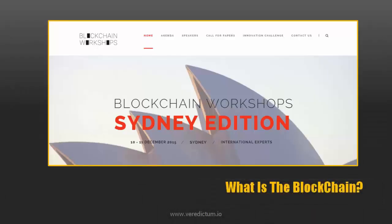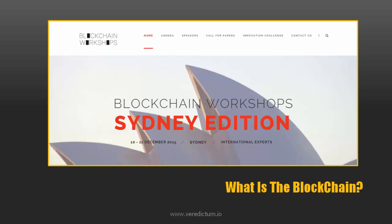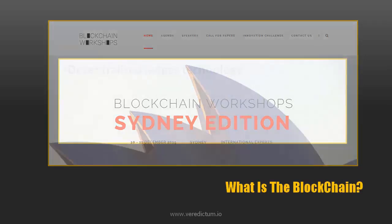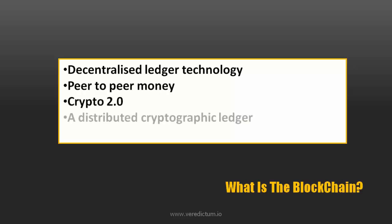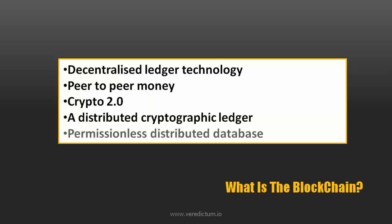Back in December last year I went to a blockchain conference here in Sydney and I asked many of the delegates to describe the blockchain simply and quickly. The descriptions that came back were pretty technical: a decentralized ledger technology, peer-to-peer money, crypto 2.0, a distributed cryptographic ledger, a permissionless distributed database. They tended to be fairly geeky and they described what the technology is rather than what the technology can do.